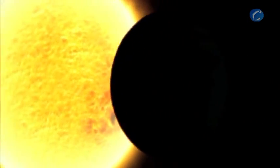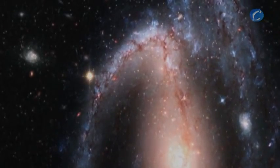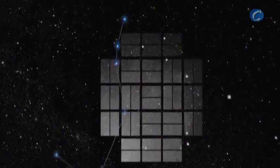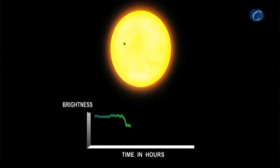When a planet moves in front of its star, that blocks some of the light of the star. So we're measuring the brightnesses of about 150,000 stars simultaneously. And if any one of them dims, we measure how much it dims, and that tells us how big the planet is compared to the star.